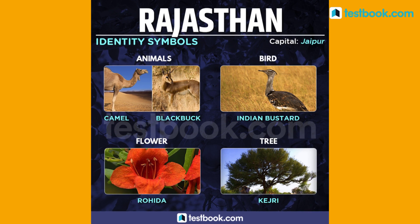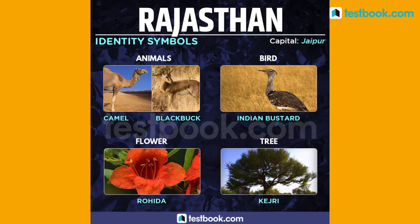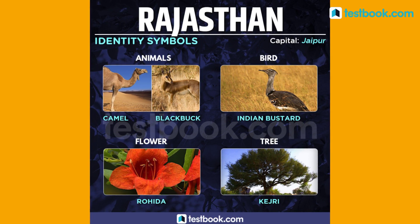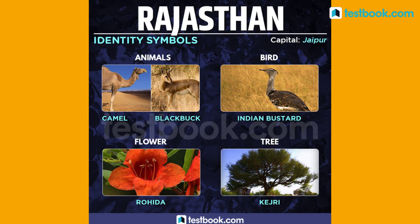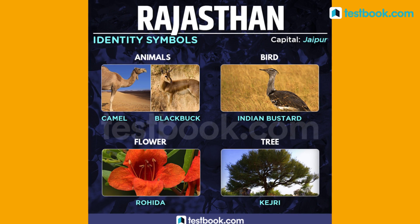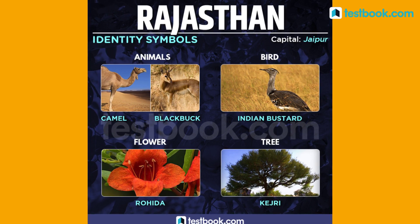Rajasthan's state animals are Camel and Black Buck, state bird is Indian Bustard, state flower is Rohida and state tree is Khejri.